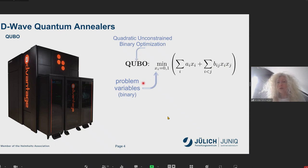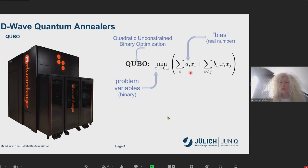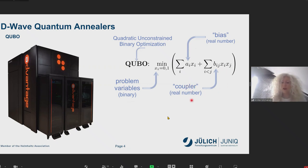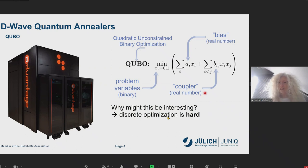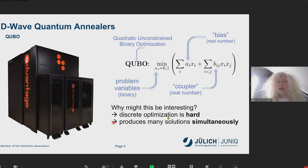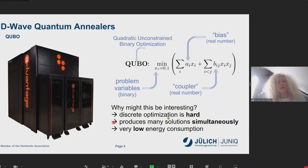We have problem variables which are binary variables taking the values 0 and 1. In this expression we have two coefficients: the bias, which is a real number in the single x term, and the coupler which couples two of these variables — and the B values are also real numbers. Why might it be interesting to solve such problems with an annealer? First, discrete optimization is a hard problem. Second, the annealer can produce many solutions simultaneously, which can lead to a speedup. Another advantage is that such a machine has very low energy consumption compared to traditional supercomputers.